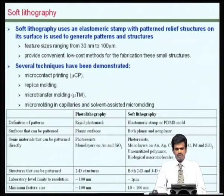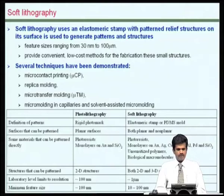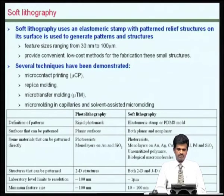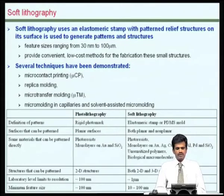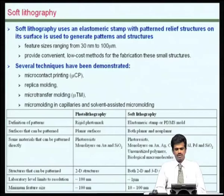These limitations could be overcome by the process known as soft lithography. This essentially uses an elastomeric stamp patterned with a relief structure, and is used to generate multiple patterns and structures. Using soft lithography one can make features with sizes ranging from as low as 30 nanometers to even hundreds of micrometers. It provides a convenient, low cost method for fabricating these small structures. Several techniques are available under the umbrella of soft lithography, such as micro contact printing, replica molding, and micro transfer molding.